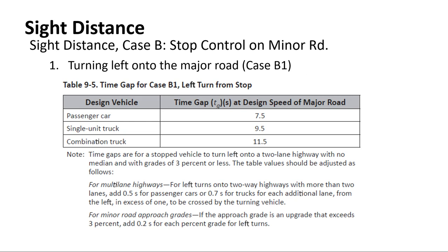The key table for this comes down to time gap: how much time do you need in a gap between vehicles for your car to move out into traffic and complete the turn? Research shows 7.5 seconds is enough time to safely make the decision and accelerate into the lane for a passenger car. For a single-unit truck it's 9.5 seconds, and for a combination vehicle it's 11.5 seconds.